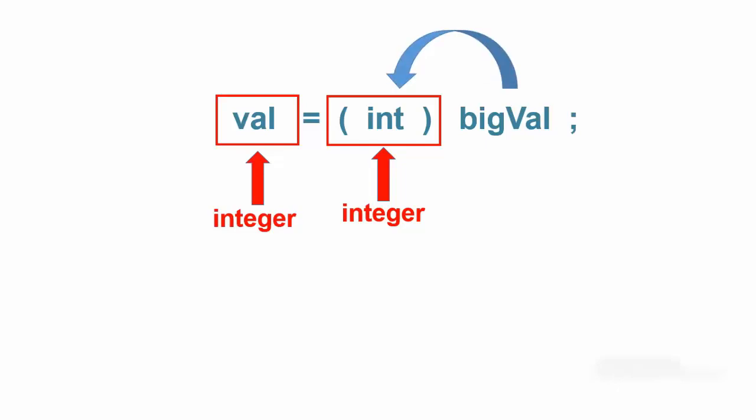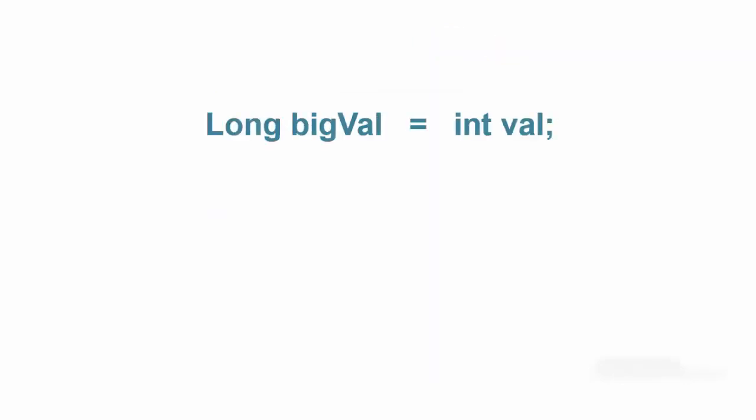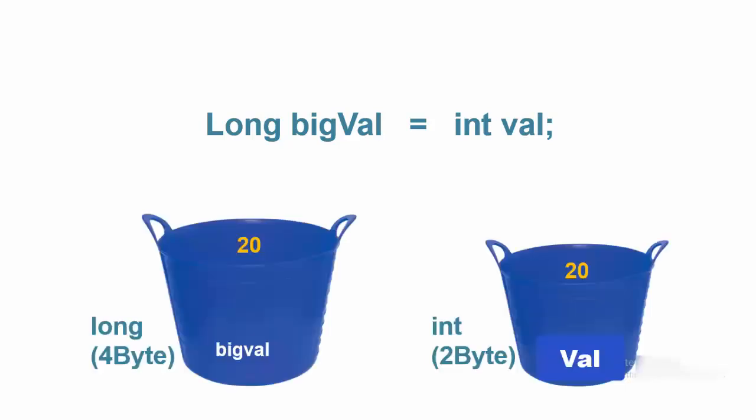Technically, no it does not. The reason a cast is not needed in this example is because you are trying to pour the contents of a two byte bucket into a four byte bucket. Because the receiving bucket is bigger than the sending bucket, there is no risk of spilling data on the floor.